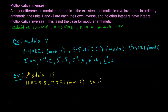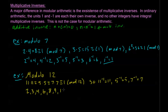So 11-inverse equals 11, 5-inverse equals 5, and 7-inverse equals 7. Of course 1 has its own inverse. But the rest — 2, 3, 4, 6, 8, 9, 10 — these have no inverses modulo 12.